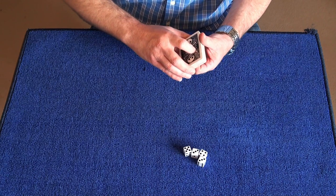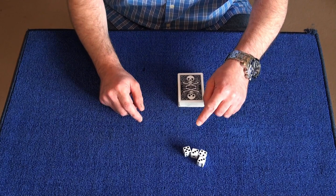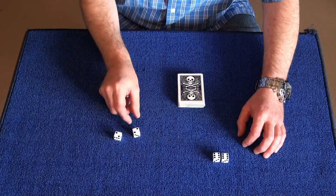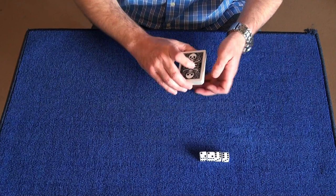Now normally you'd have a spectator to deal some cards out, but I haven't got a spectator, so to make it fair I'm going to shake a random number and I'll deal that amount of cards out. So we've got 6 and 6 which is 12, and 2 which is 14, and another 2 makes 16, so I'm going to deal out 16 cards.